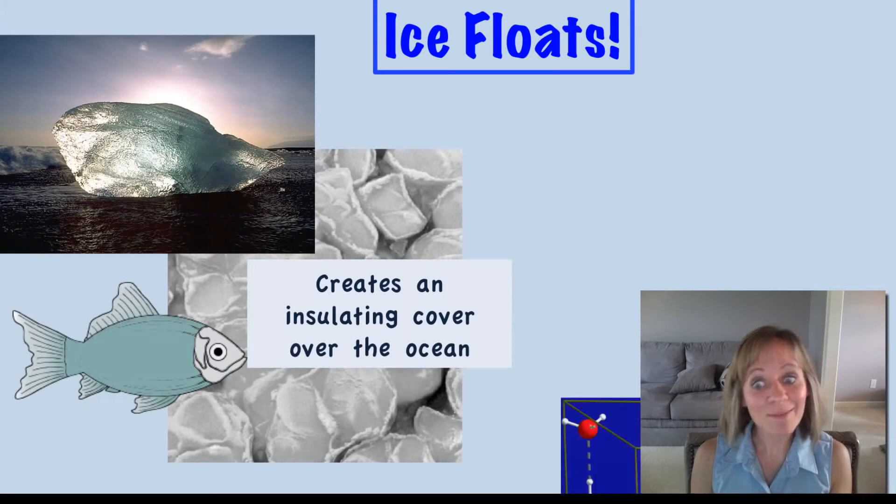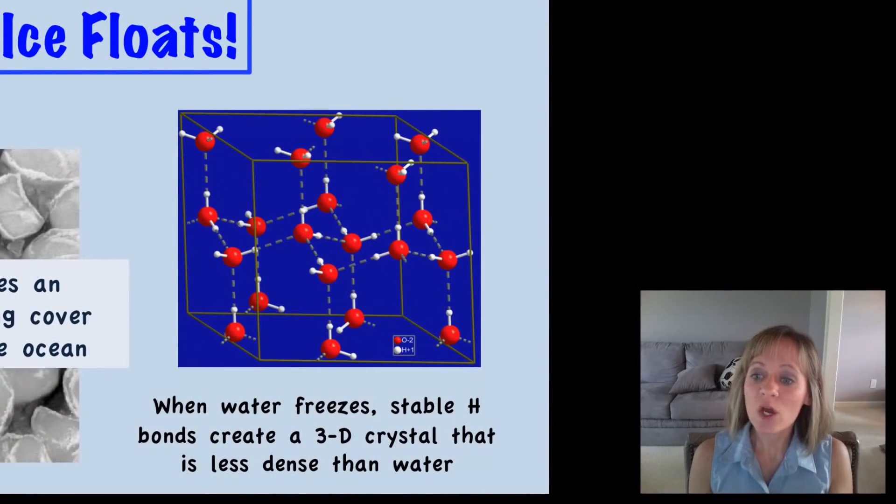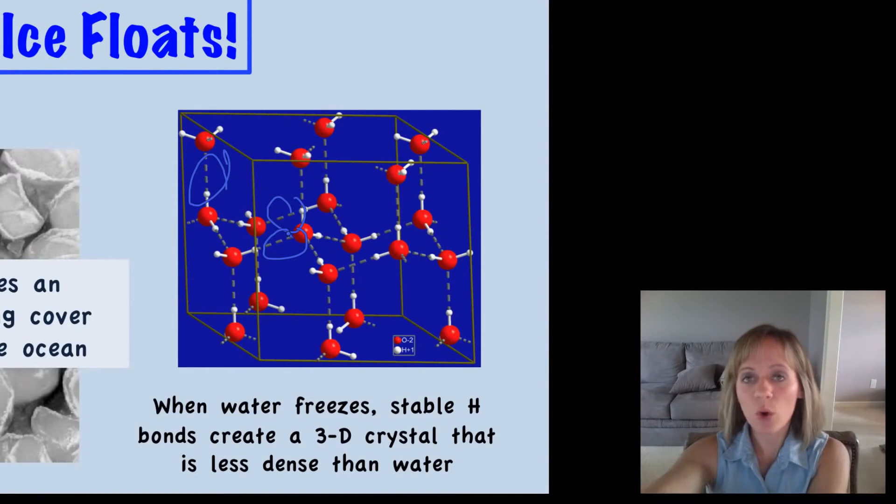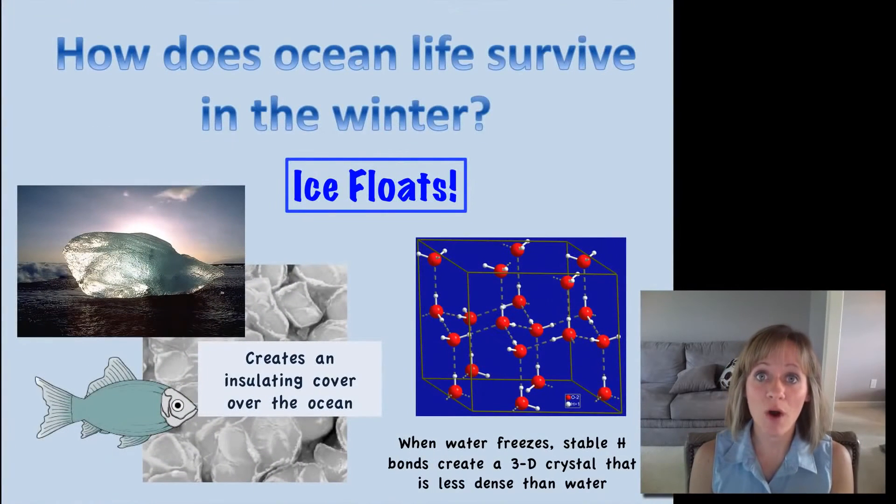Now you might be wondering, well why does ice float? It's because when water freezes, we have these stable hydrogen bonds form between the water molecules. They sort of hold the water molecules at arm's length, and that's creating this crystal structure that is actually less dense than water, so that it does float on top of water. So that's the second really cool property of water: cohesion, adhesion, and ice floats.